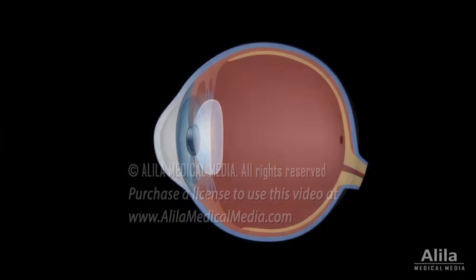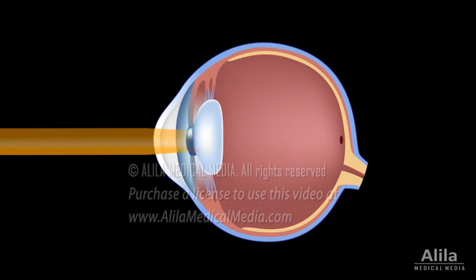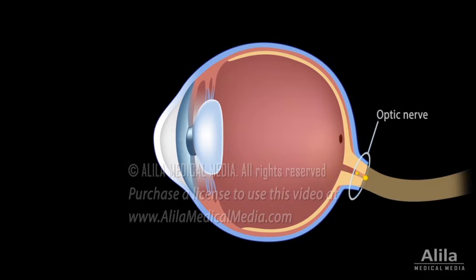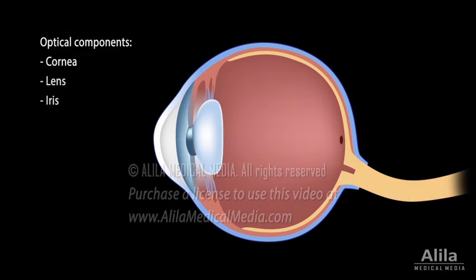The eye consists of optical components which work like a camera, capturing and focusing images, and neural components that convert these images into nerve impulses and send them to the brain. The main optical components are the cornea, the lens, and the iris.